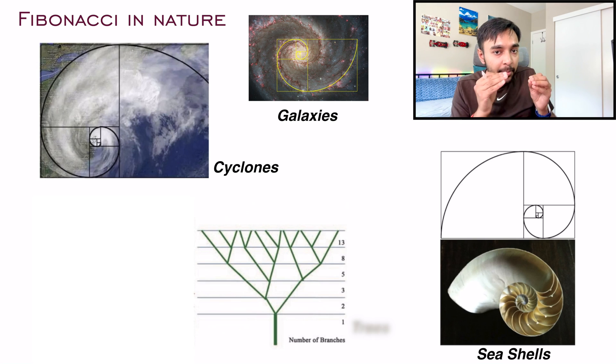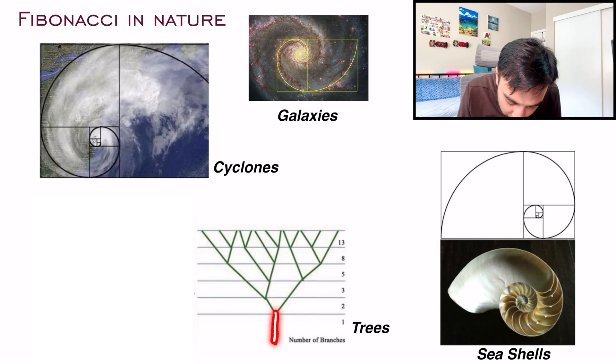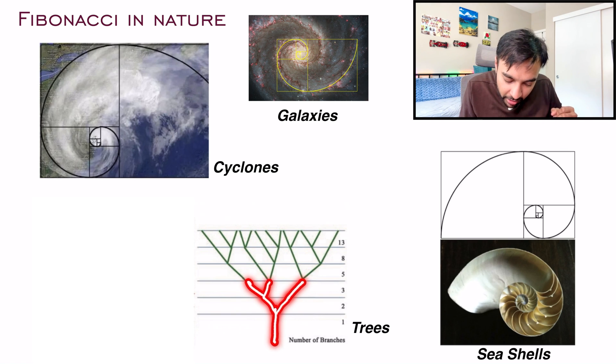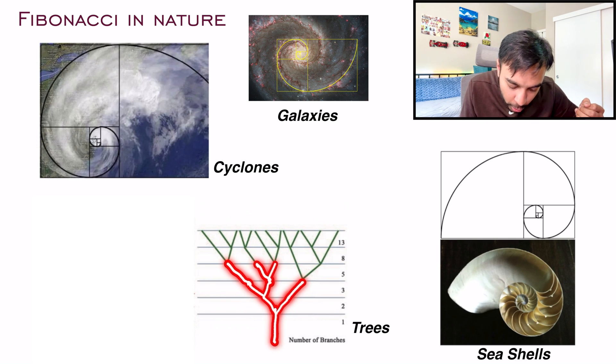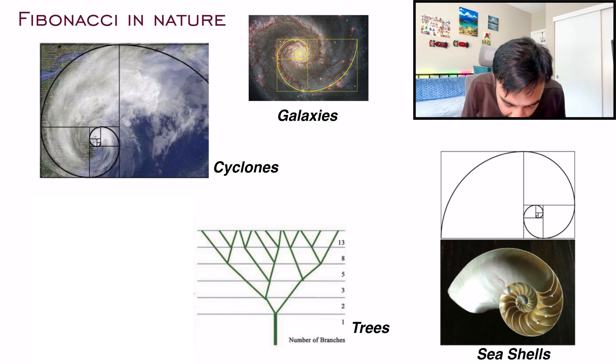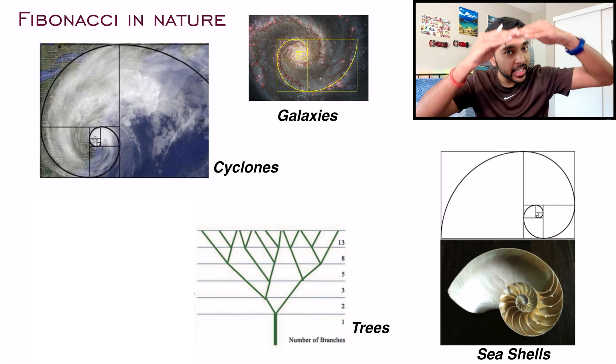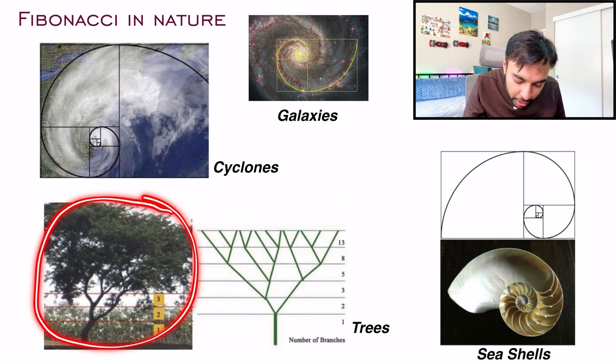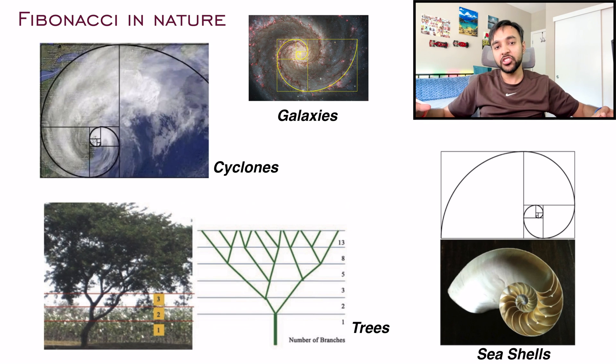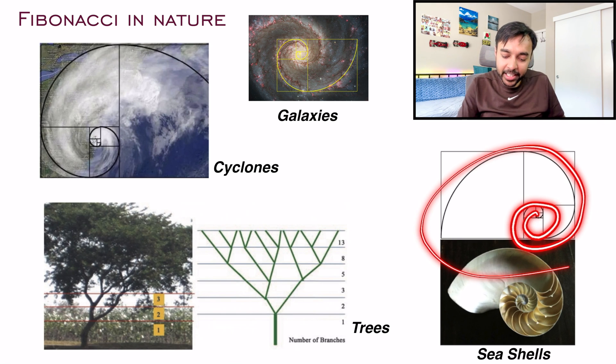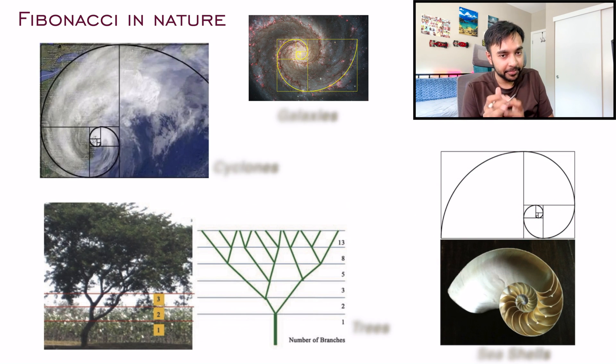Even with trees, you can see a Fibonacci sequence. You have a root and it diverts into two parts. What generally happens is one branch doesn't diverge and the other diverges into two. Going forward, one branch doesn't branch and the other goes into two parts. When you measure the levels, look at the number of branches: you see 1, 2, 3, 5, 8, and 13. This is once again a Fibonacci sequence. This is how you see Fibonacci sequences all around you in nature. I'm pretty sure you've seen this pattern in so many places.